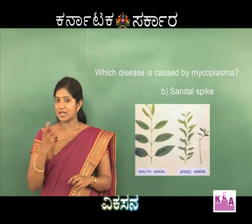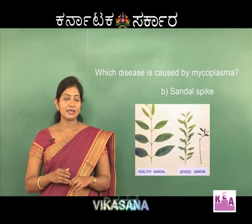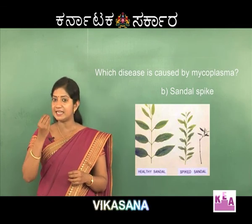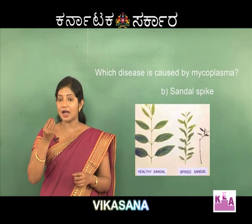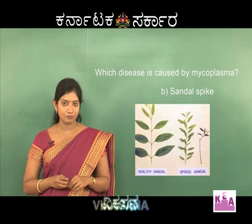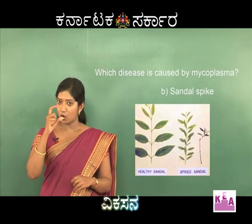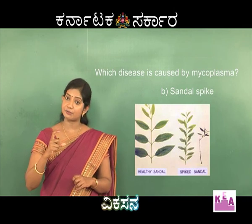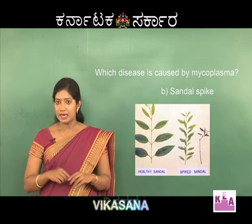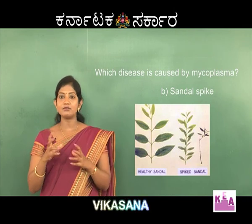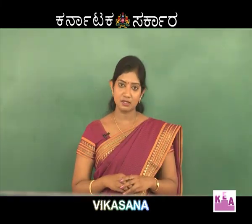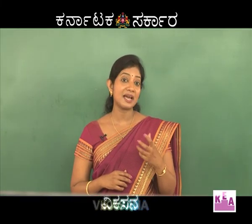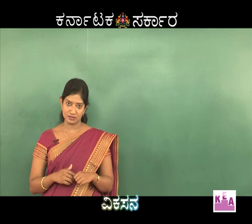which is a disease caused in sandalwood. If you see the plants which are infected by mycoplasma, the leaves are highly reduced in size. If you observe the internode, the internode will be stiff and short. In short, it gives a bunch kind of appearance, or we can say it gives the appearance of spike-like inflorescence.